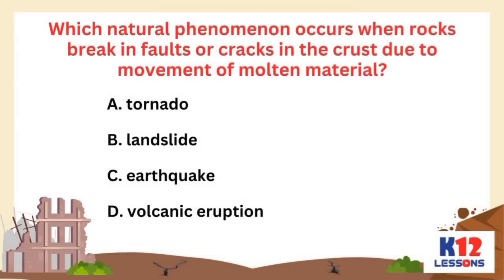Which natural phenomenon occurs when rocks break in faults or cracks in the crust due to movement of molten material? A. Tornado. B. Landslide. C. Earthquake. D. Volcanic eruption.